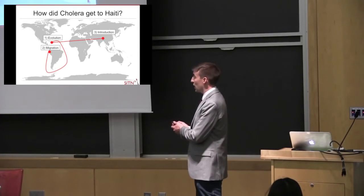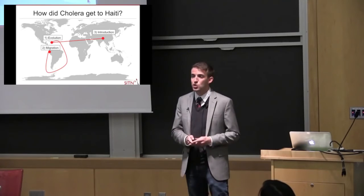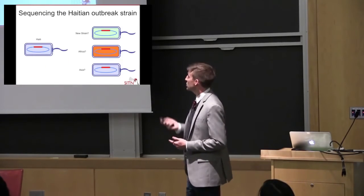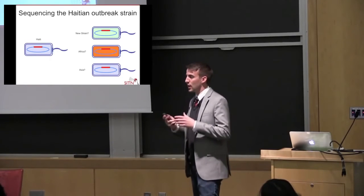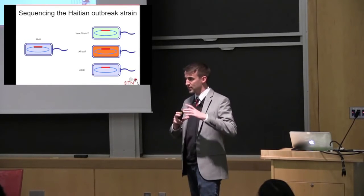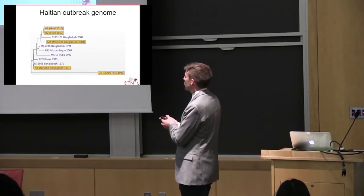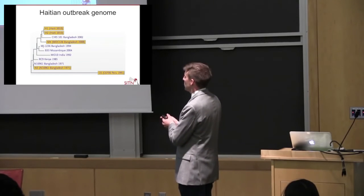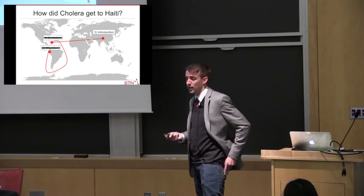In order to test these three hypotheses, scientists decided to sequence the genome of the Haitian outbreak strain. Sequencing the Haitian outbreak strain basically allows us to take the fingerprint of this bacteria, and by taking this fingerprint, the two samples sequenced from Haiti were very, very similar to strains sequenced from Asia. This indicated that cholera was introduced to Haiti through inadvertent human activity.